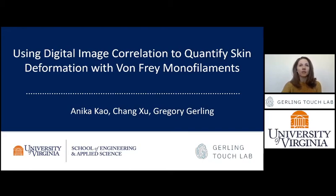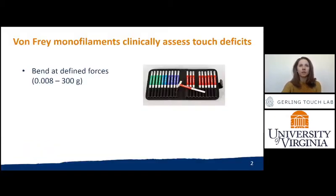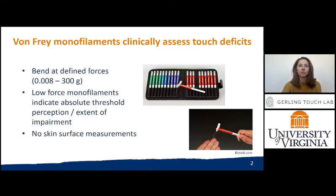Hi, my name is Annika and I'm a PhD student at the University of Virginia. To assess the extent of sensory impairments, clinicians commonly examine regions of a patient's skin by touch using thin monofilaments. One's ability to perceive low force monofilaments indicates absolute threshold and thereby the extent of impairment.